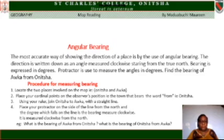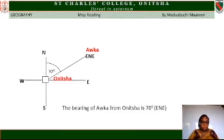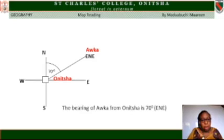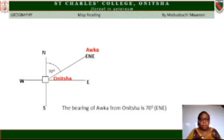Example: what is the bearing of Oka from Onitsha? From the diagram on the screen, draw your North-South-East-West line at Onitsha, then draw a straight line connecting Oka from Onitsha. The angle between the lines is 70 degrees, which means the bearing of Oka from Onitsha is 70 degrees. In terms of direction, it is East of North-East.